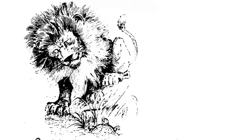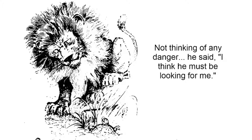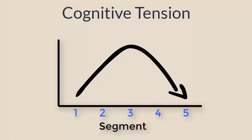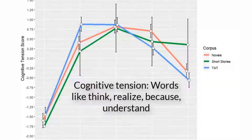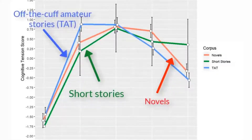Finally, there's the story's climax. Characters often confront challenges and conflict towards the middle of the story. A group of words called cognitive tension words — such as "think," "realize," or "because" — reveal when people are trying to make sense of their world. We argued that cognitive tension words would start low in the story, peak around the middle, and then fall as the story ended. And again, our computer analyses found just that — all three types of stories show peaks in their use of cognitive tension words in the middle.